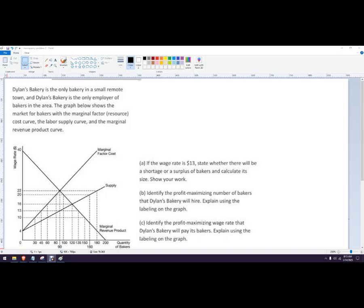Hello out there to you. In this video, let's do an AP micro practice problem. It's a monopsony problem. So we know it's a monopsony because it says the only employer of bakers in the area, so Dylan here runs the bakery, is the only one hiring people.